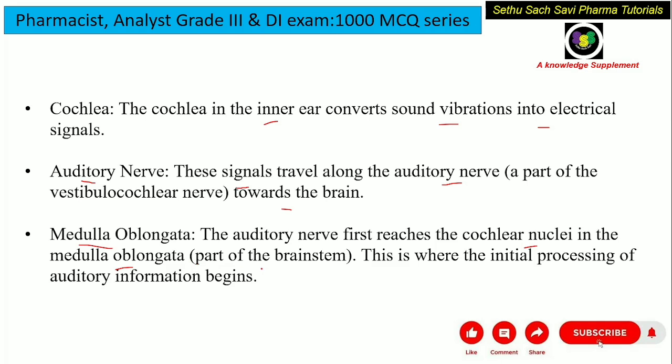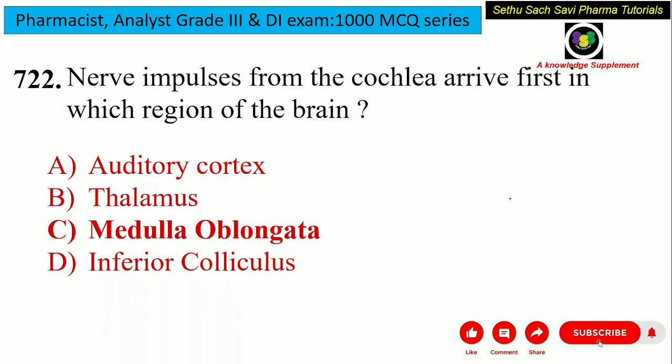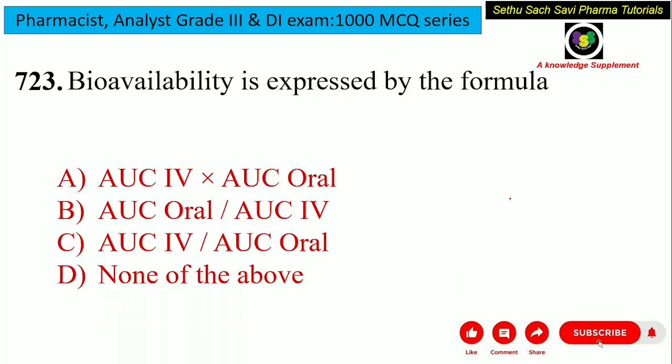Medulla oblongata is a part of the brainstem, where the auditory information is processed. So the answer for this question is option C, medulla oblongata.